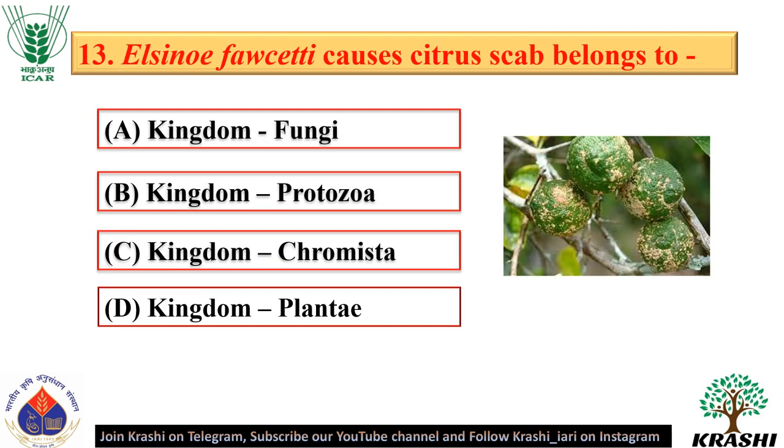Question number 13. Elsinoe fawcettii causes citrus scab, and it belongs to kingdom Fungi.